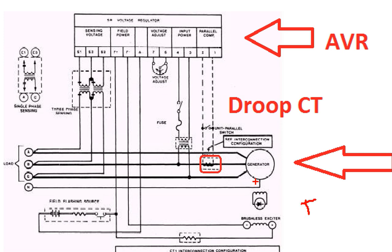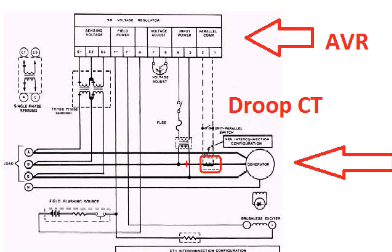First of all, we want to assess Droop CT. The Droop CT — you can use a current transformer. If you have a RYB sequence, you can use an OYB sequence.